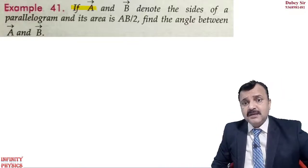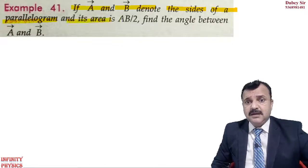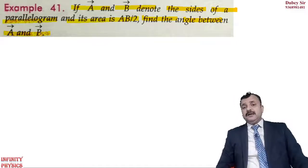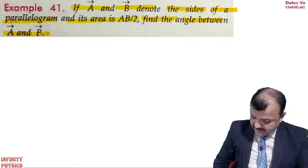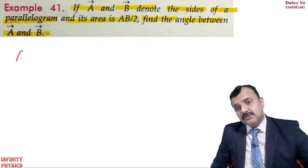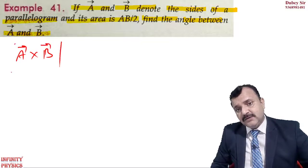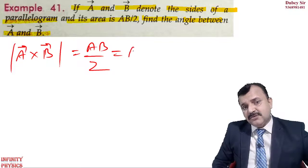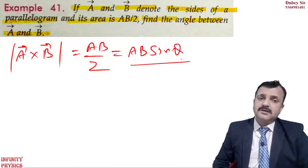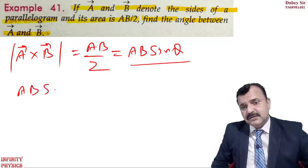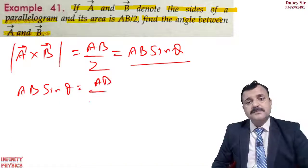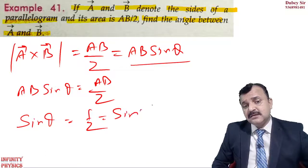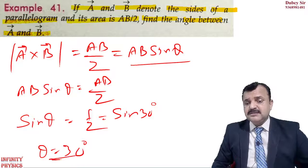Third question: if vector A and B denote the sides of a parallelogram and the area is ab/2, find the angle between A and B. The magnitude of A cross B is given as ab/2. We know |A×B| = ab sinθ, so ab sinθ = ab/2, which gives sinθ = 1/2 = sin 30°. Therefore theta equals 30 degrees.